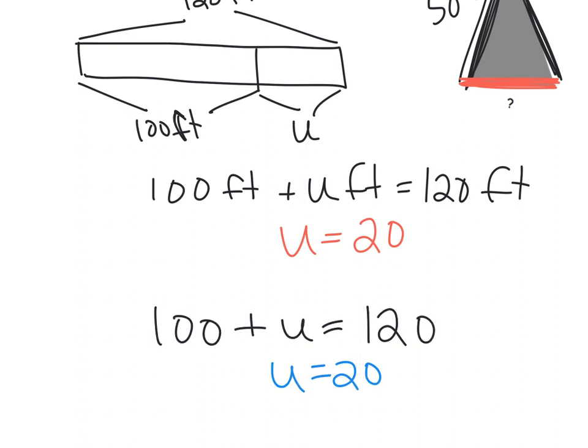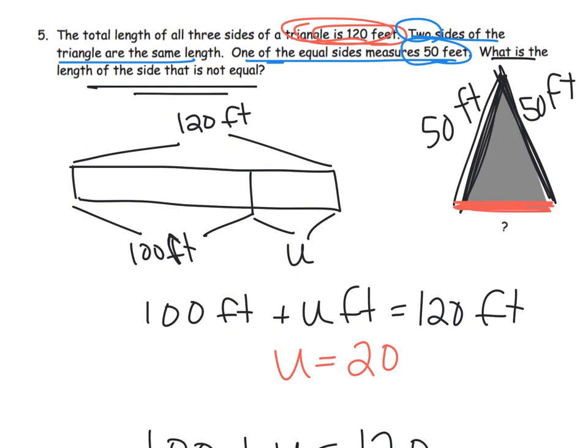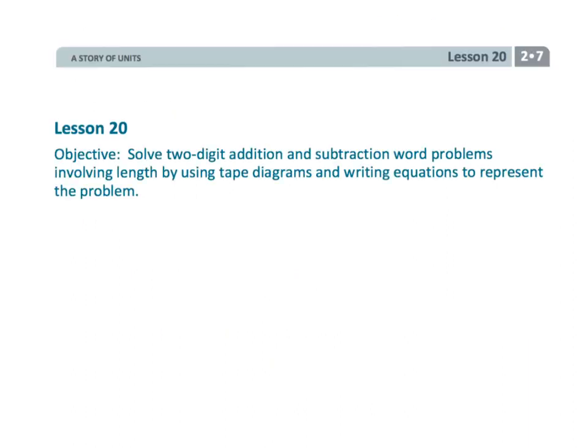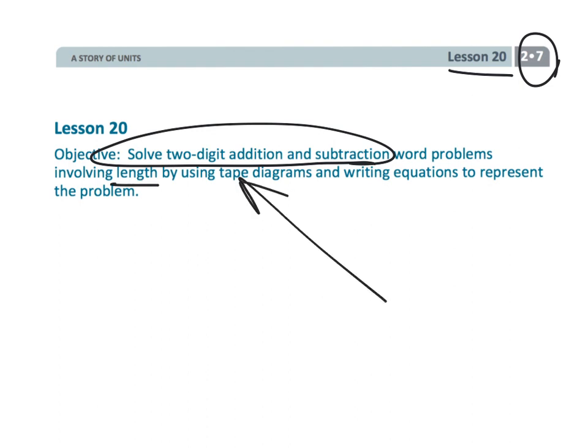Now are we using algebra here? Well, sort of. We're an informal algebra. We want students to be able to use logic at this point, certainly not some formal algebra at this point. And that wraps up second grade module seven lesson 20, solving two-digit addition and subtraction problems involving length by using tape diagrams to help us.